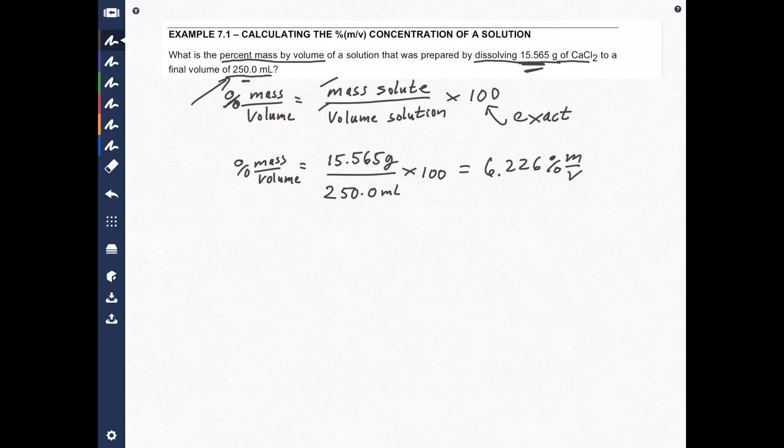Now let's look at our numbers. Here we have four significant figures, and here we have five significant figures, and this is exact. So now we know our final answer can only have four significant figures, and one of those unique cases where the calculator gives you the exact right answer. The answer is 6.226% mass over volume.